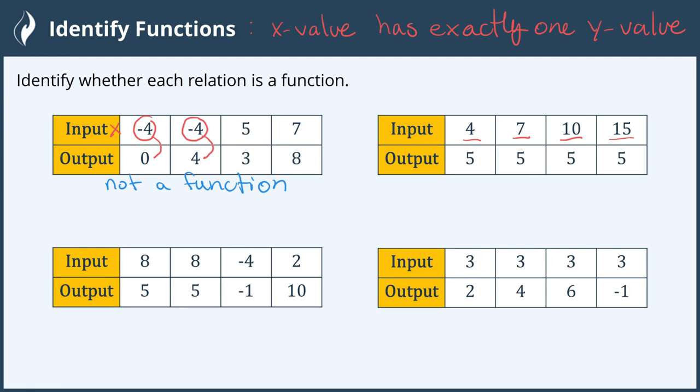Now some may say that the y value is duplicated. That's okay. We are only looking that each x value has one y value, and they do. The 4 has a 5, the 7 has a 5, the 10 has a 5, and the 15 has a 5.